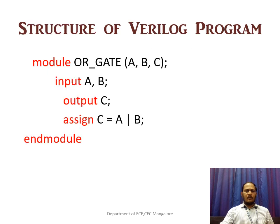This is an example of a very simple HDL program. The module name is 'R gate', with A, B, C as inputs and an output port. The R gate module consists of three ports: A, B, and C as output. It ends with 'endmodule'. This is the end of the first part of module 1. The next part is continued by Savita Madam.